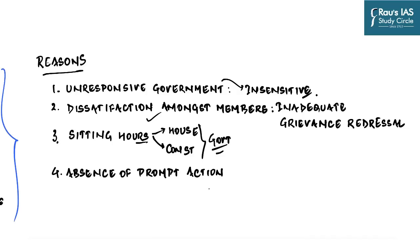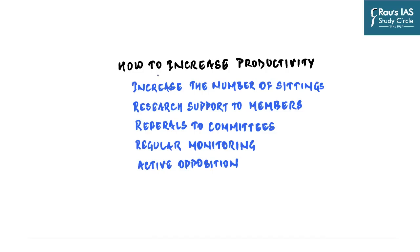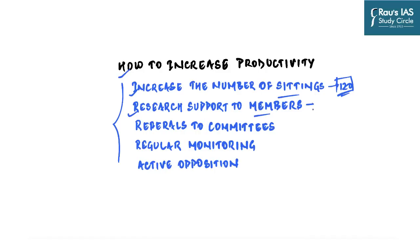There is also an absence of prompt action against disrupting MPs. To increase productivity, the first recommendation is to increase the number of sittings. The National Commission to Review the Working of the Constitution recommended that the minimum sittings for Lok Sabha and Rajya Sabha should be fixed at 120 — a constitutional obligation. You cannot force quality debate, but you can at least mandate that they sit for 120 days.